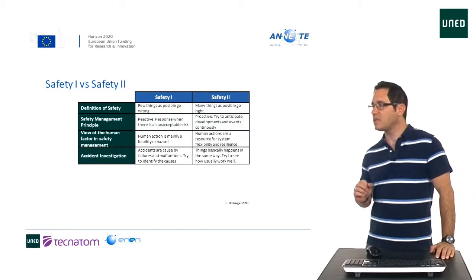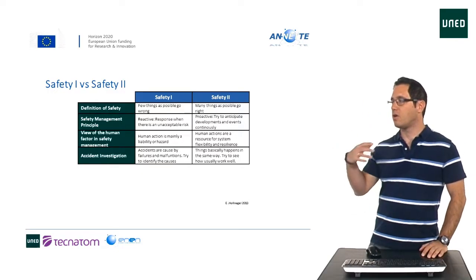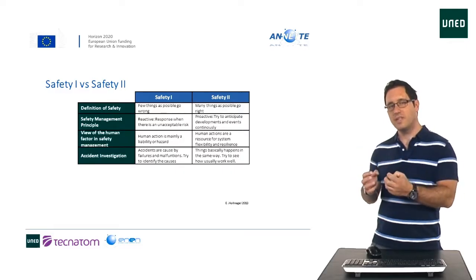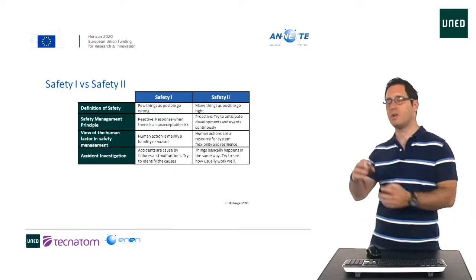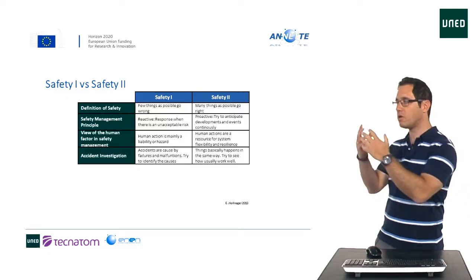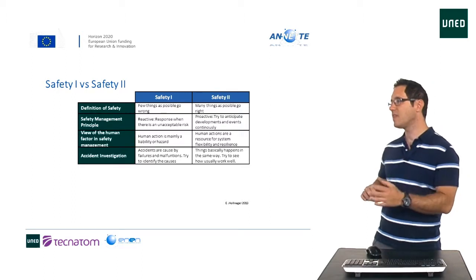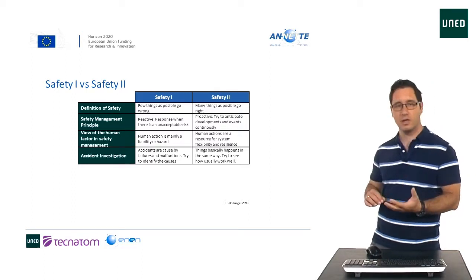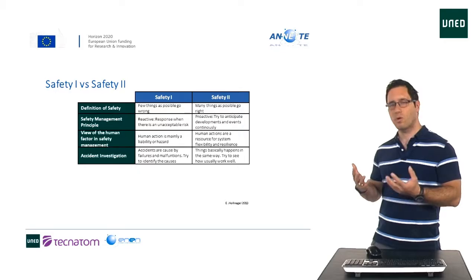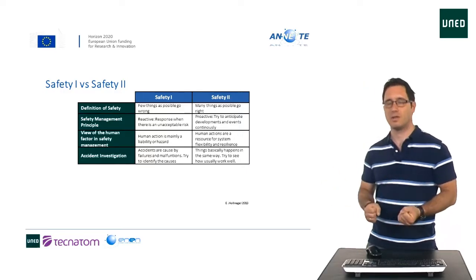From the accident investigation perspective, Safety I states that accidents are caused by failures and malfunctions. Our investigation is going to try to go backwards to figure out what happened and what led to those failures or malfunctions. In Safety II, we acknowledge that things happen in basically the same way many times, so we are going to try to see how they usually work well, rather than why they went bad once.